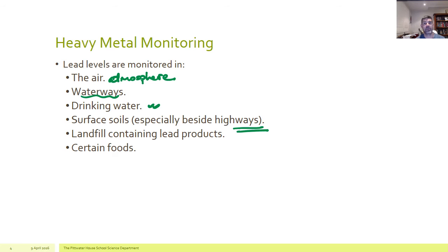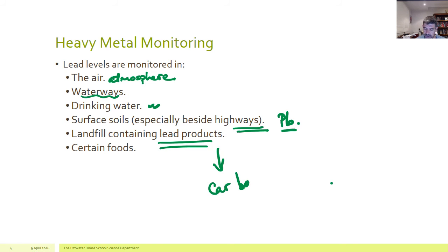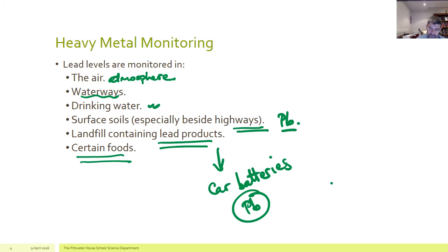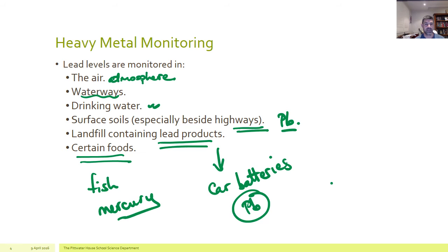Because of the use of lead paints on roadways, any surface soils — especially those near highways — may have higher than normal quantities of lead remaining, so we need to check and monitor those regularly. Any landfill containing lead products is also a concern — we still use lead batteries, for example; car batteries use lead as both the cathode and anode electrode. Even certain foods, the soils they've been grown in, and any fertilisers added also need to be monitored. Certain fish may have picked up traces of mercury, so we need to monitor those levels too.